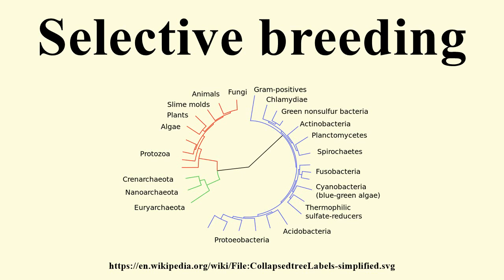Bonamia ostreae is a protozoan parasite that causes catastrophic losses in European Flat Oyster Ostrea edulis. This protozoan parasite is endemic to three oyster regions in Europe. Selective breeding programs show that susceptibility to infection differs across oyster strains in Europe. A study showed that Rossmore Oysters in Cork Harbour, Ireland, had better resistance compared to other Irish strains. A selective breeding program at Cork Harbour uses broodstock from 3- to 4-year-old survivors and is further controlled until a viable percentage reaches market size.